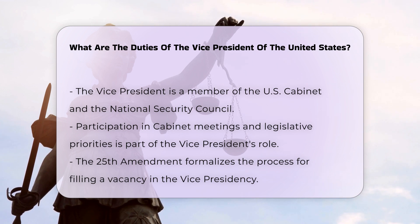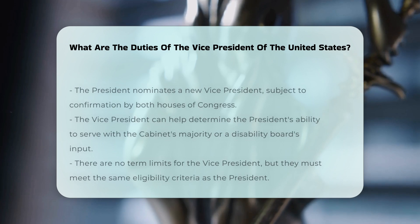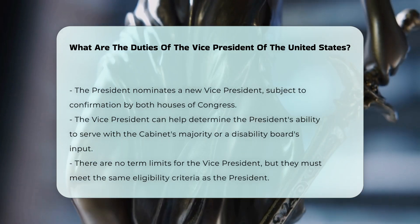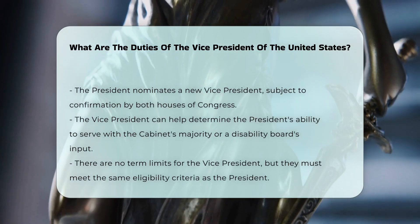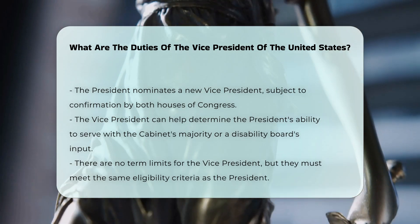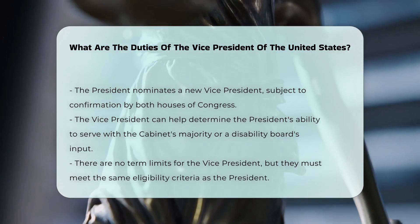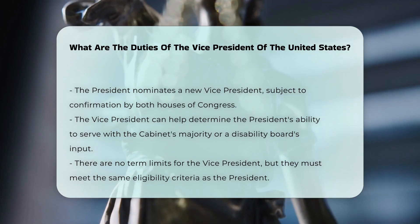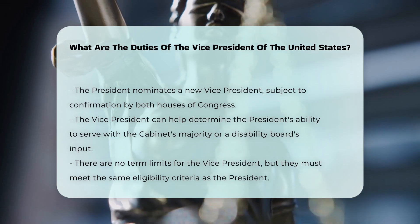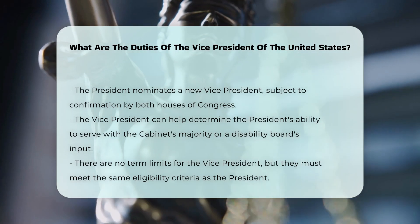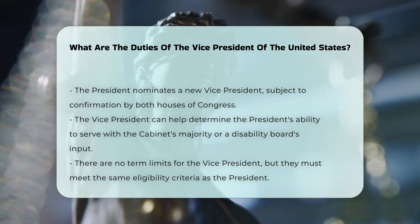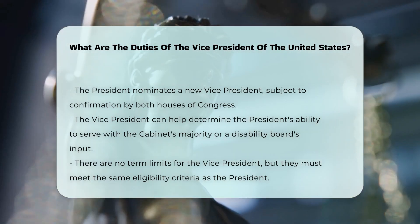Additionally, the Vice President can play a pivotal role in determining the President's ability to serve, working in conjunction with a majority of the cabinet, or a disability board, to notify Congress of the President's inability to discharge their duties.